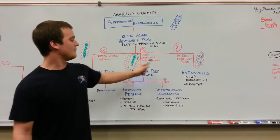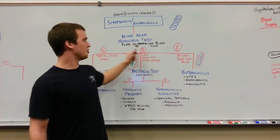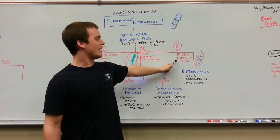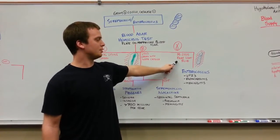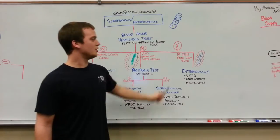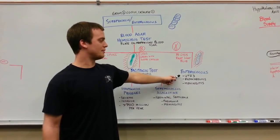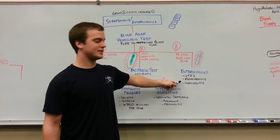Lastly, if you have a gamma result on the hemolysis test, the organism shows no lysis and appears as a faint light blue color on the plate. This indicates enterococcus bacteria, common in UTIs, endocarditis, and meningitis.